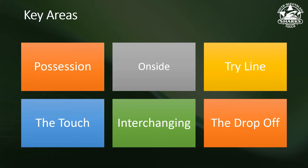In this video, we will look at six different key areas. These six areas we believe are those that are least in common in our application across the rules. So we have possession, onside, try line, the touch, interchanging, and the drop off.